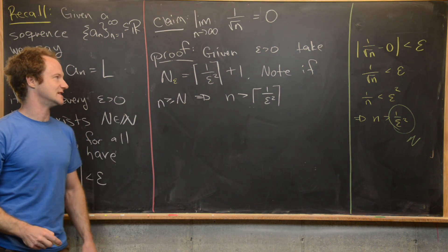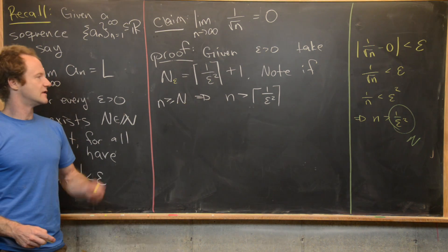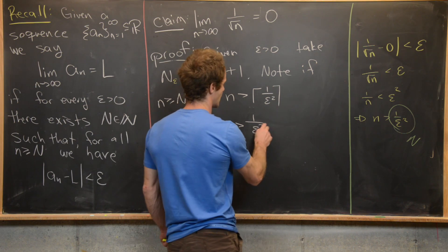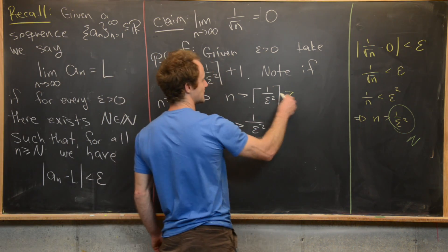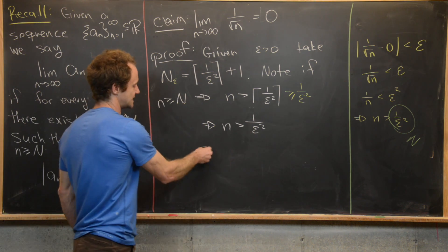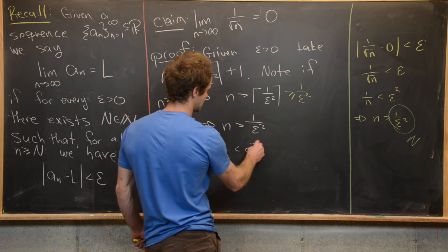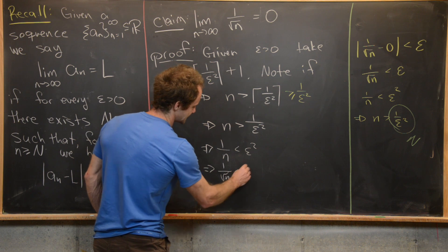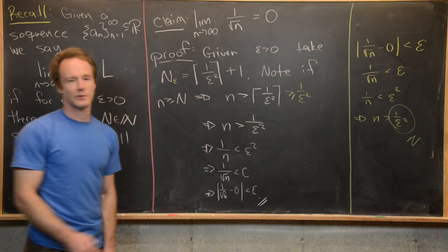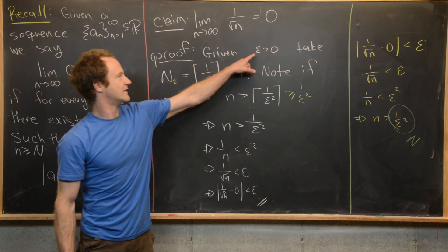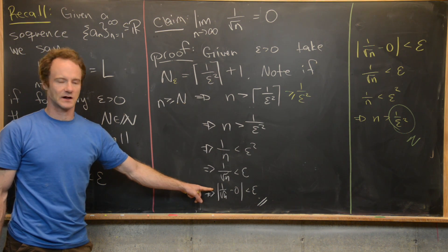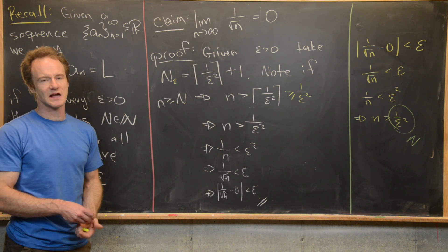Since n is bigger than or equal to the ceiling of 1 over epsilon squared plus 1, it is strictly bigger than the ceiling of 1 over epsilon squared, and therefore strictly bigger than 1 over epsilon squared itself, since the ceiling is always greater than or equal to its argument. Reversing the steps: 1 over n is less than epsilon squared, so 1 over root n is less than epsilon, which equals the absolute value of 1 over root n minus 0 being less than epsilon — exactly what we needed. Given epsilon greater than zero, we found our N and proved this limit.